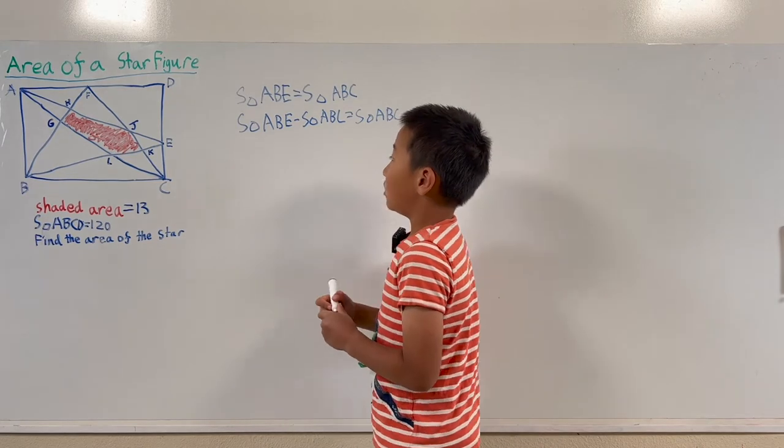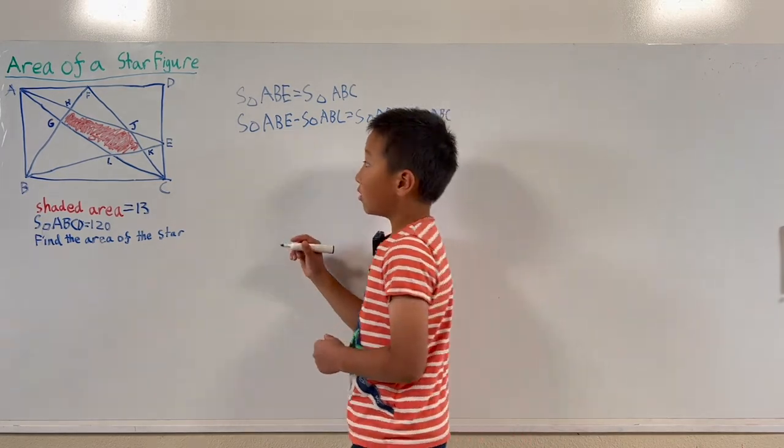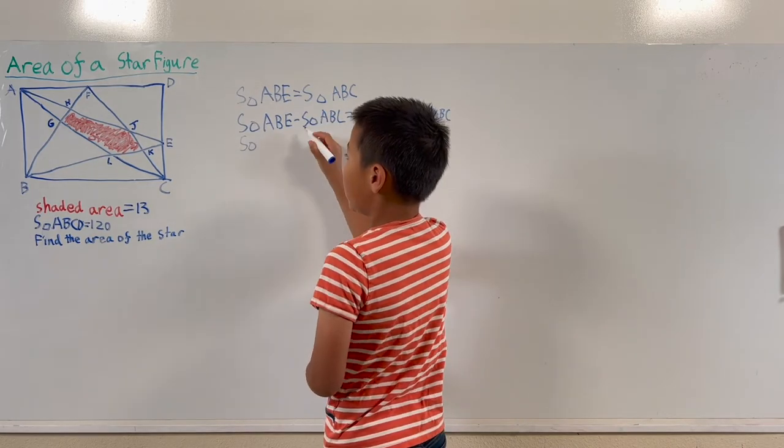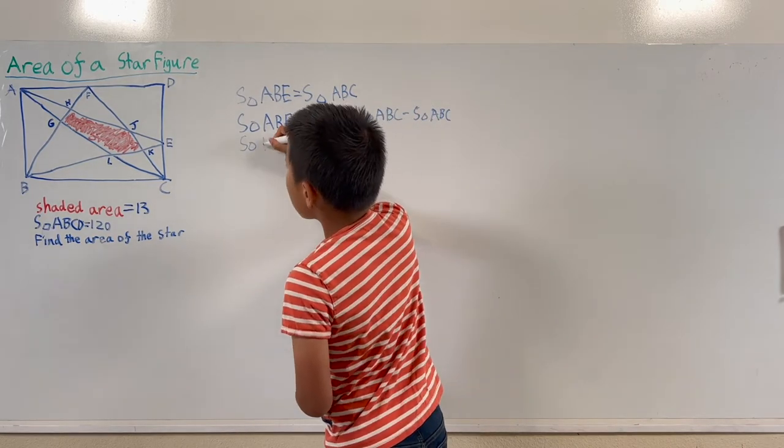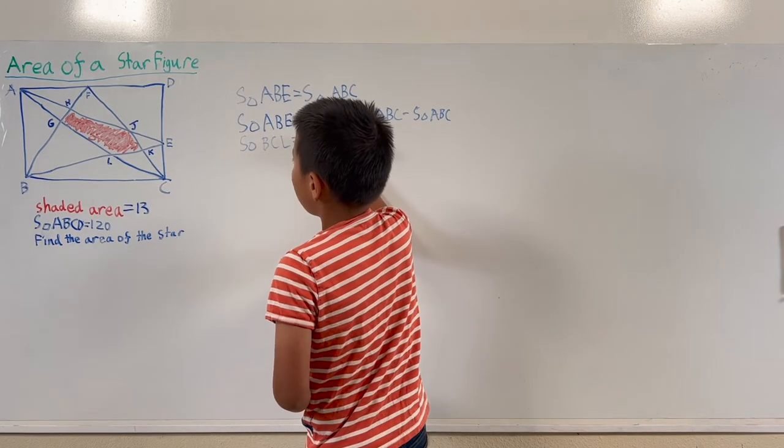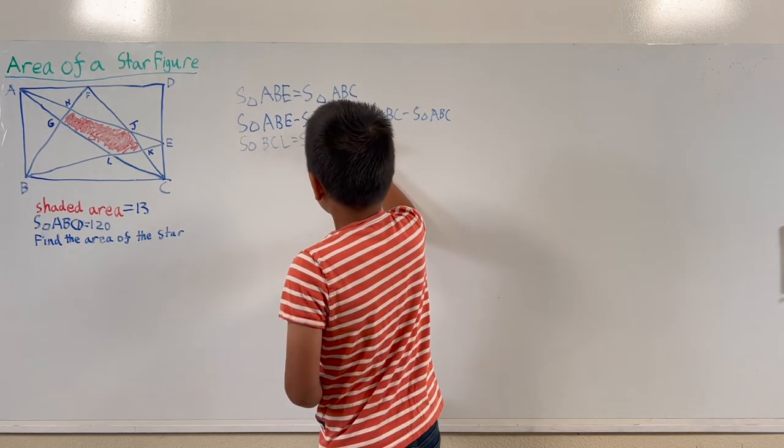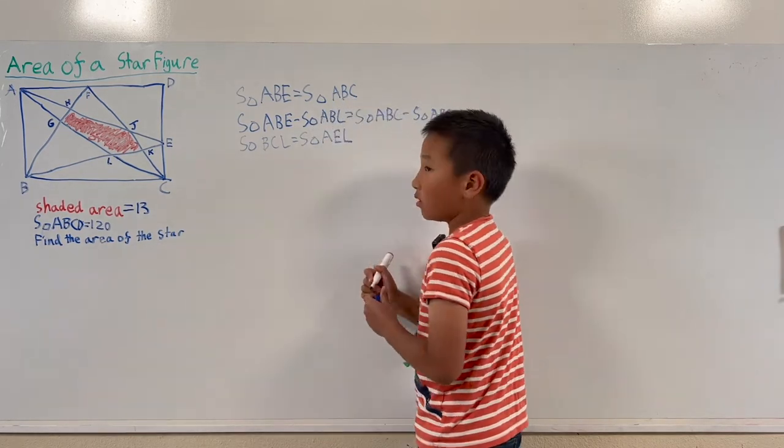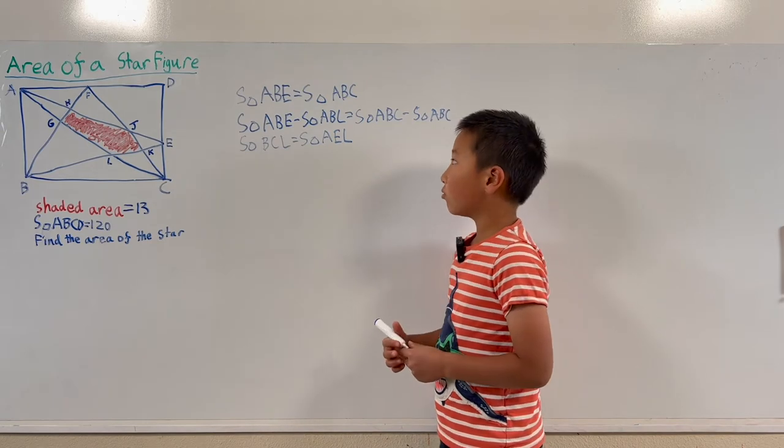So we can know that the area of triangle ABCL equals the area of triangle AEL. So this is called batwing.